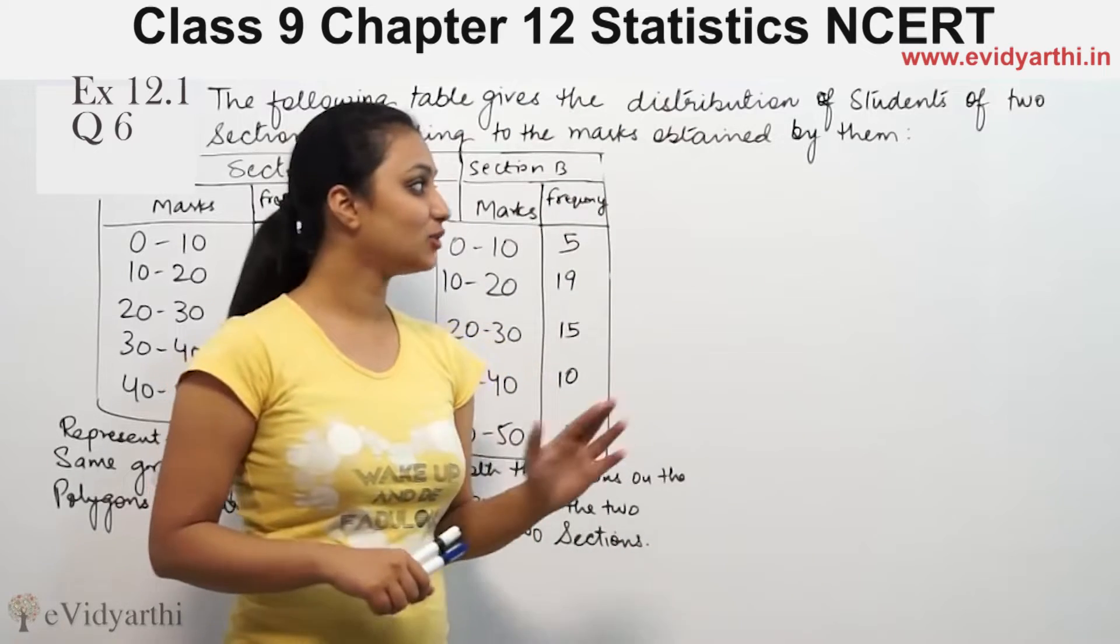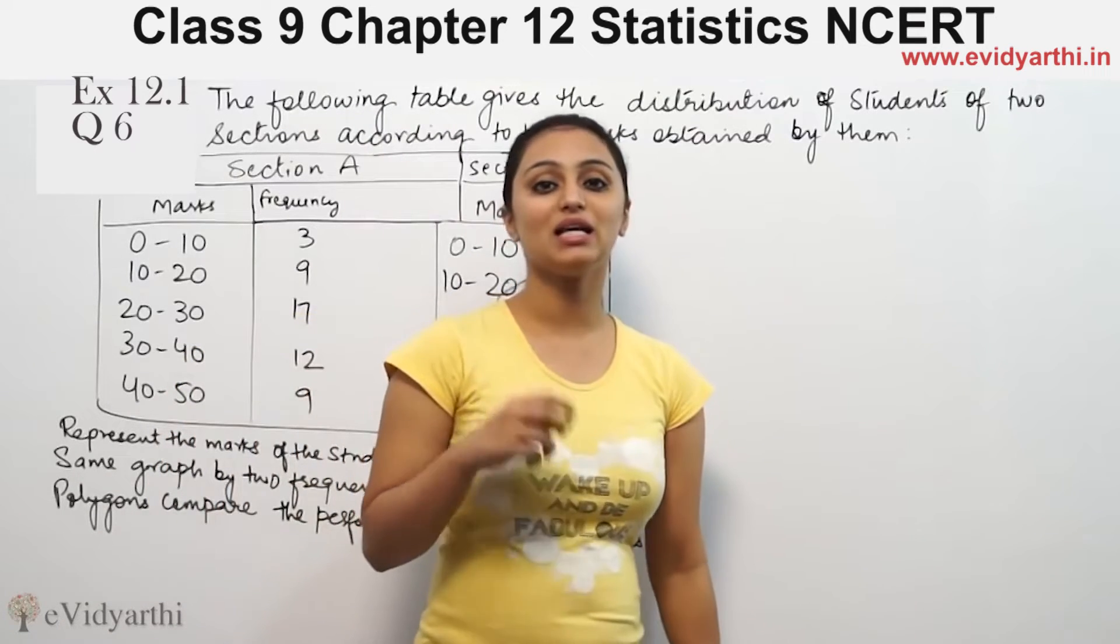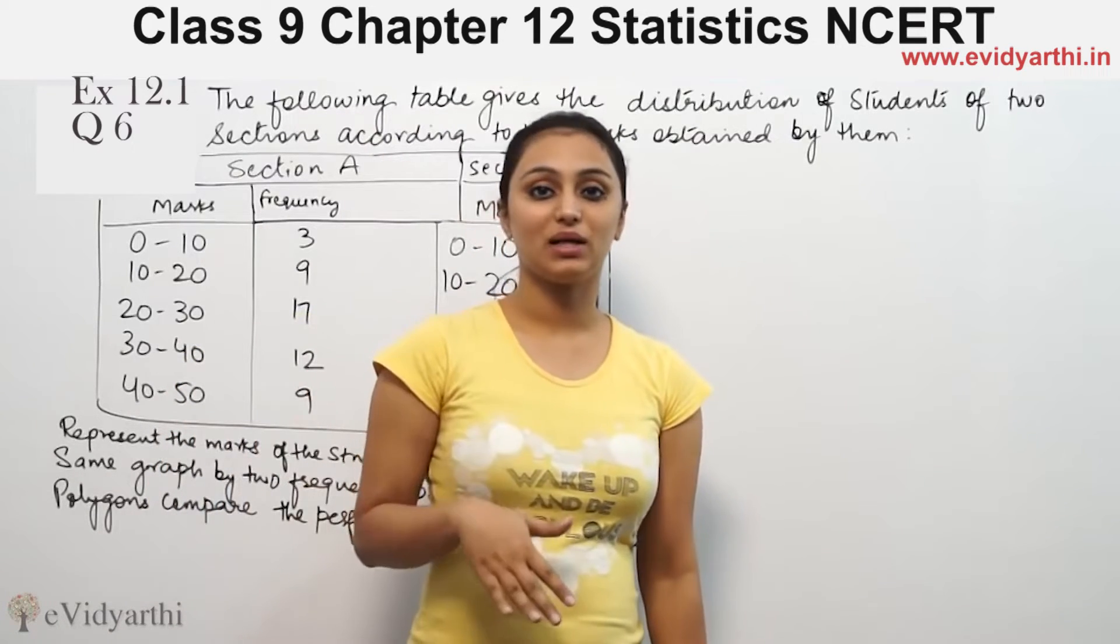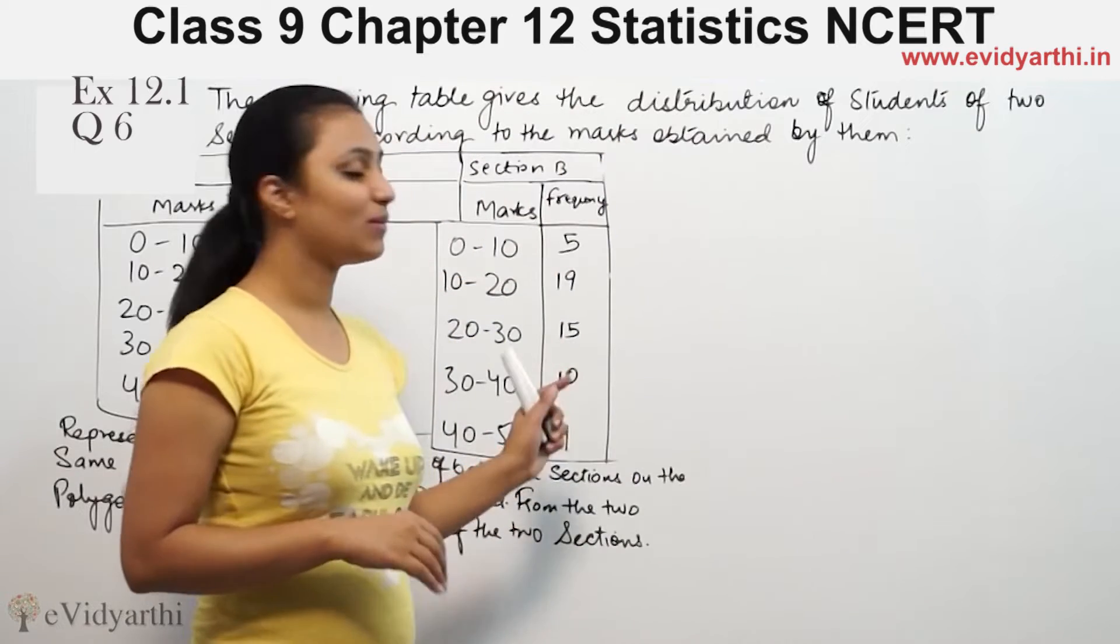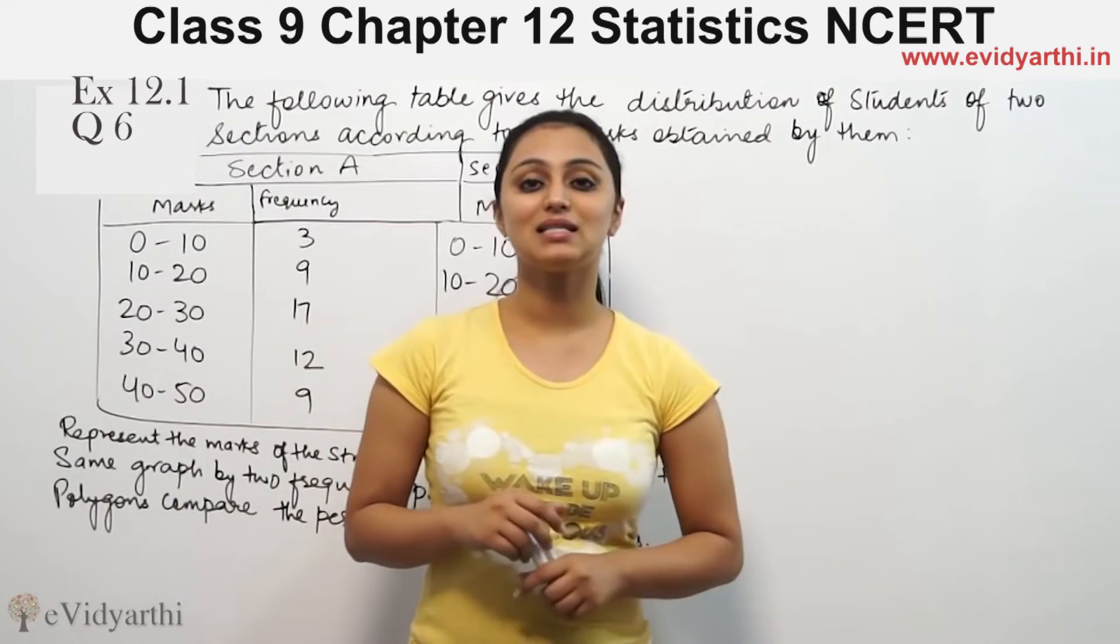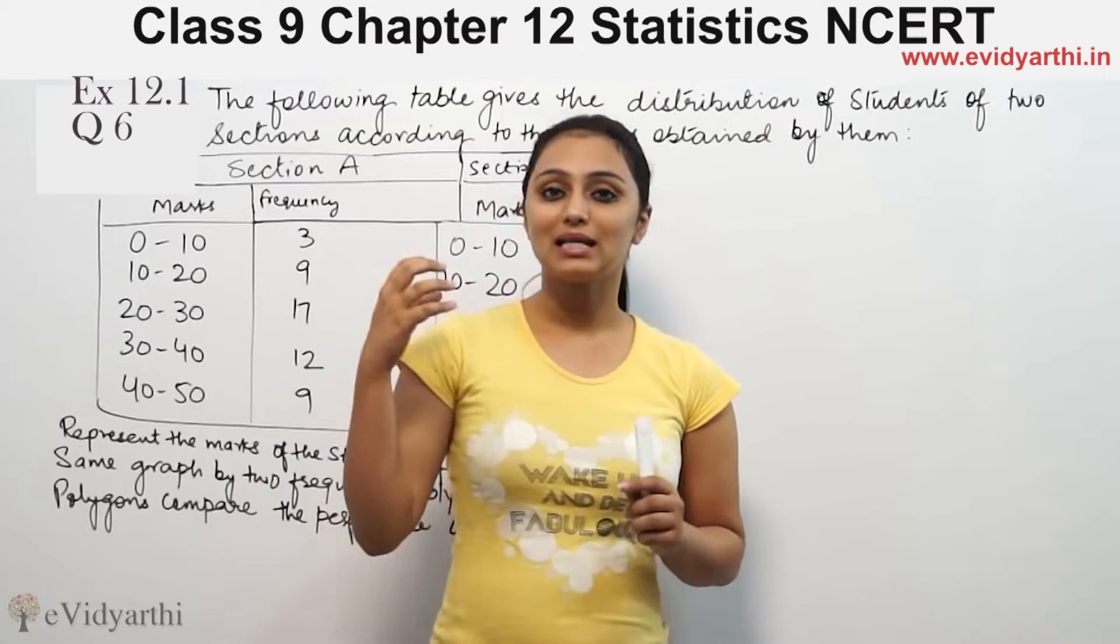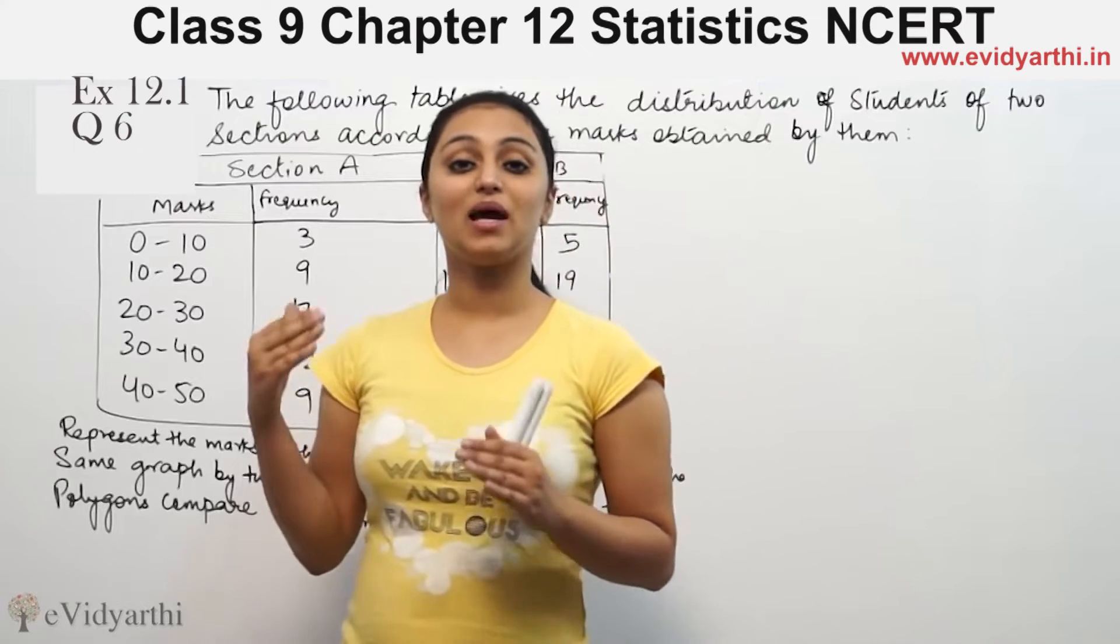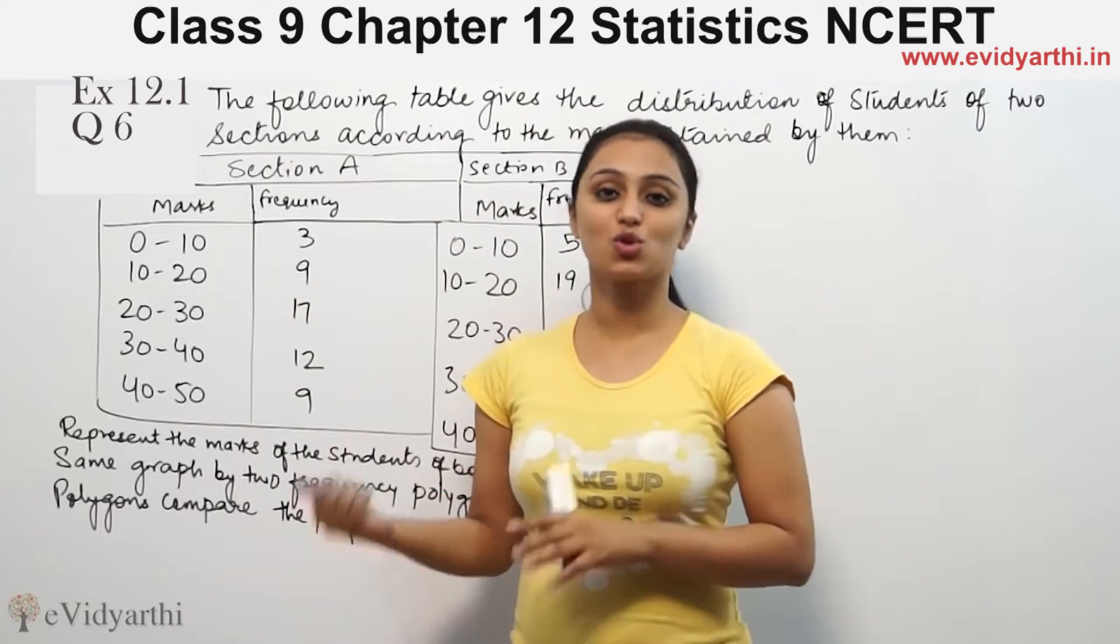For frequency polygons, they can be made in two ways: one is with a histogram, one is without a histogram. If we are making two frequency polygons together or doing some comparison, then we will make it without a histogram.